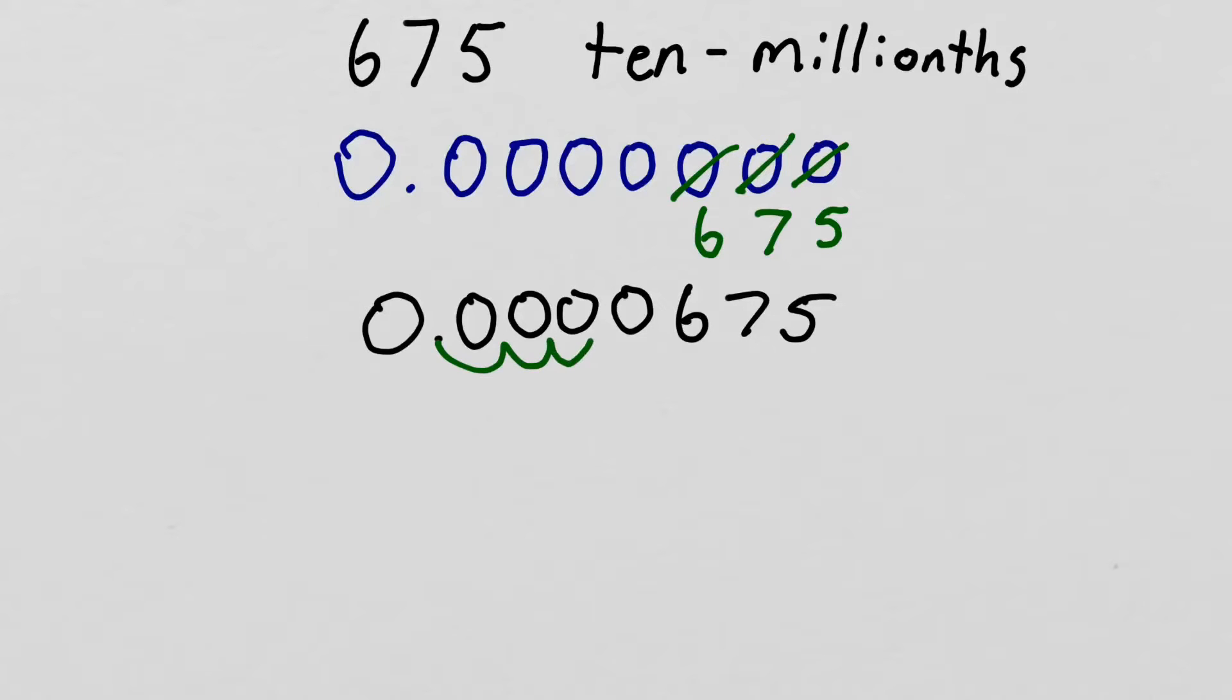one, two, three, four, five places over to the right. So we can rewrite that as 6.75 times 10 to the negative fifth. That's our final answer. So 675 ten-millionths is equivalent to 6.75 times 10 to the negative five.